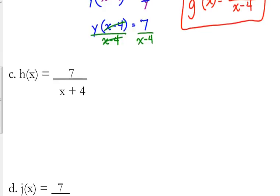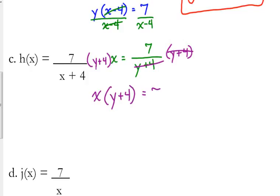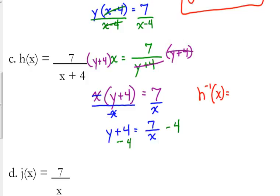Let's do another one because I know this is a little weird. 7 over x plus 4, switch x and y. x is equal to 7 over y plus 4. y is stuck in the denominator, so we get it out by multiplying. What's next? Divide by x. And then we can subtract the 4, and y is by itself. So that means h inverse of x is equal to 7 over x minus 4.